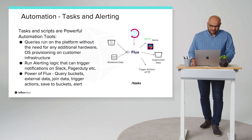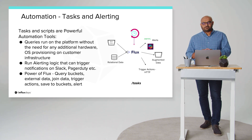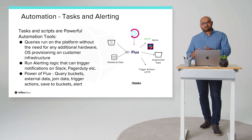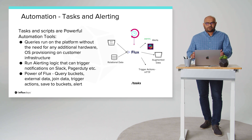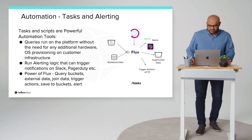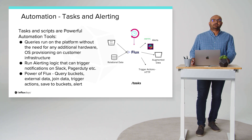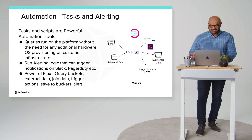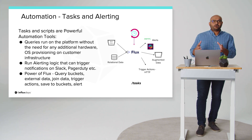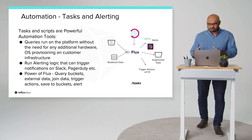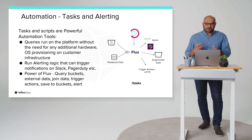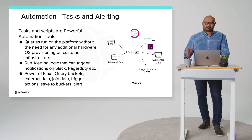Moving on to our next pillar: automation. This is a key value of our platform. Our task endpoint can let you run queries at regular intervals without having to worry about provisioning or operating the runtime yourself. On your tasks, you can check for certain conditions and based on that trigger alerts — maybe a PagerDuty ping to wake somebody up in the middle of the night, or a Slack message to a channel. Add to that the power of Flux, where you can go beyond simple querying — for example, pulling data from relational databases to add additional context and trigger more complex, relevant events.